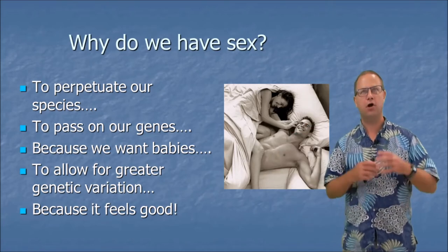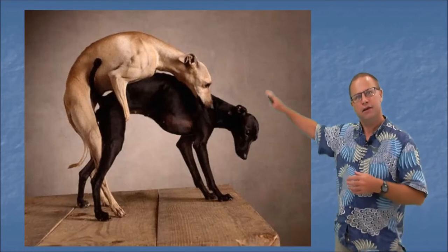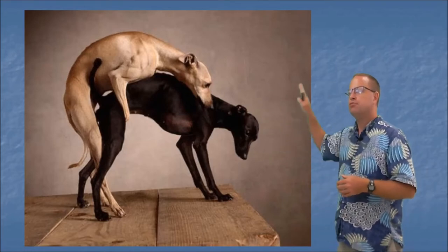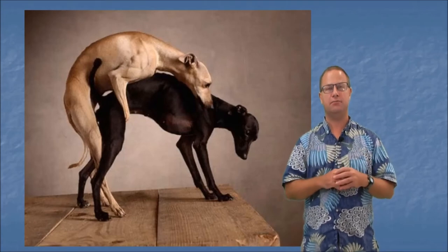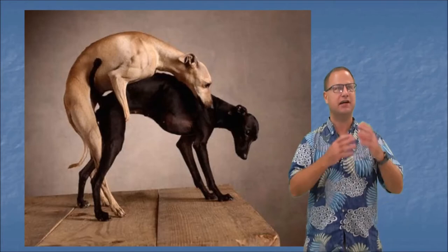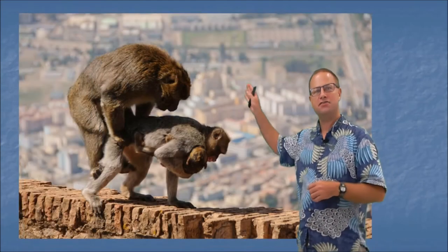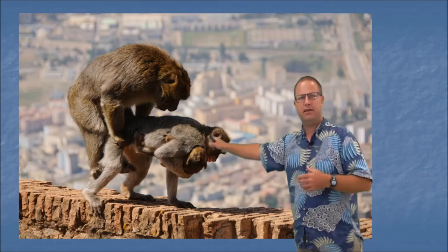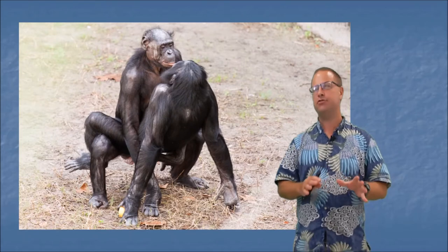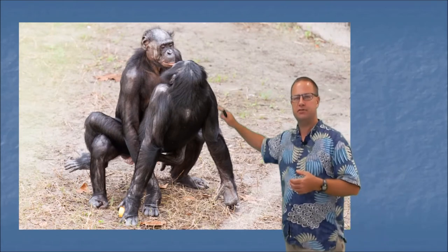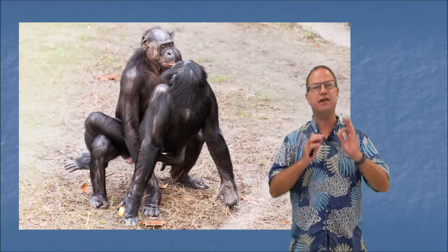Contrary to what you might think, humans aren't the only species that might enjoy sex. If you see two dogs doing it in the street, they're doing it because it feels good — there's an evolutionary drive, but there's a proximate reason too. If you think human sex can be risque, wait until you look at some primates. These Japanese macaques are going at it even with a little child right there. And bonobos have over 40 different sexual positions. In primates, just as in humans, we see homosexuality, masturbation, and all sorts of behaviors — these are not uniquely human behaviors.